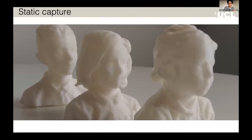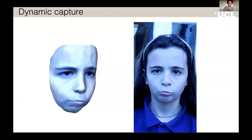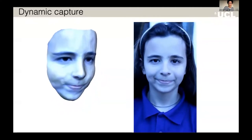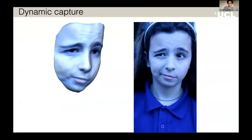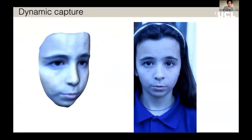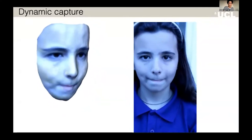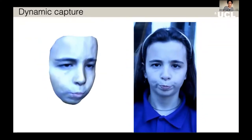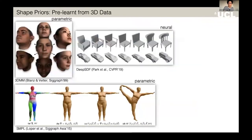So far we've talked about capturing a static world. But in many cases we also want to capture the dynamics — we want to learn 3D representations that can explain not just a single instant in time, but that can capture any possible deformation and configuration. This is the main topic of my research: learning 3D deformable models that can explain how the shapes of objects evolve over time or vary across a category, and learning them from images only.